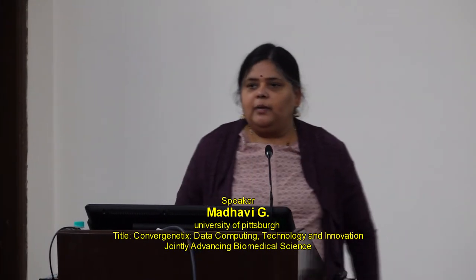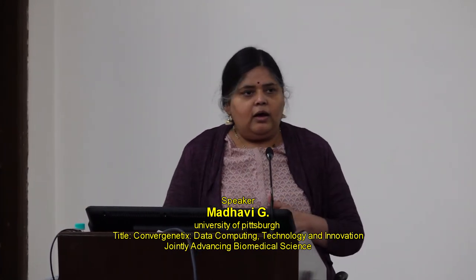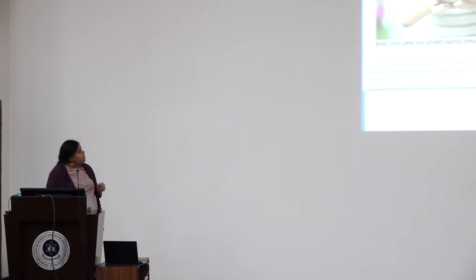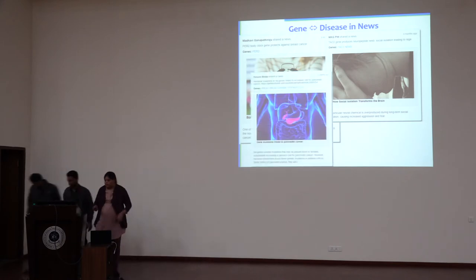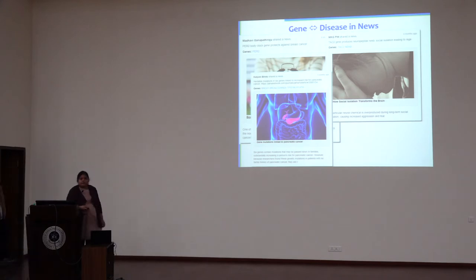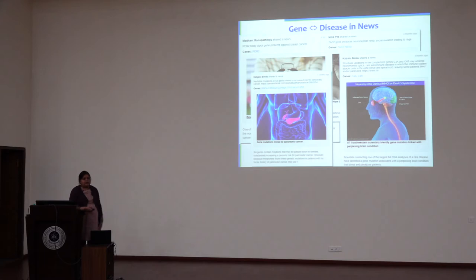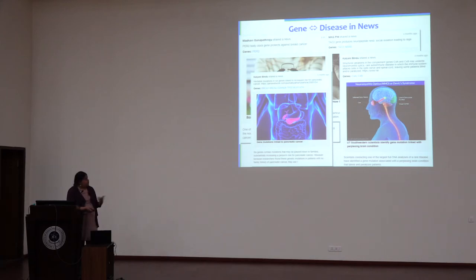We often come across, if you subscribe to news feeds from Nature or any general science magazines, articles reporting that a gene related to this disease has been discovered. For example, PER2 is a gene related to breast cancer, TAC2 is related to another disease, and so on. But what next? Why are those genes related to whatever disease or trait we are studying, and how can we understand the biology behind it? That is the type of research that I'm doing.